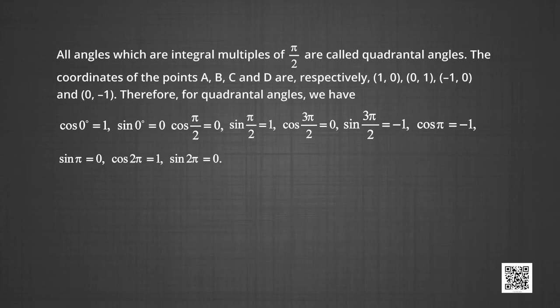The coordinates of points A, B, C, and D are respectively (1, 0), (0, 1), (−1, 0), and (0, −1). Therefore, for quadrantal angles: cos 0° = 1, sin 0° = 0, cos(π/2) = 0, sin(π/2) = 1, cos π = −1, sin π = 0, cos(3π/2) = 0, sin(3π/2) = −1, cos 2π = 1, and sin 2π = 0.